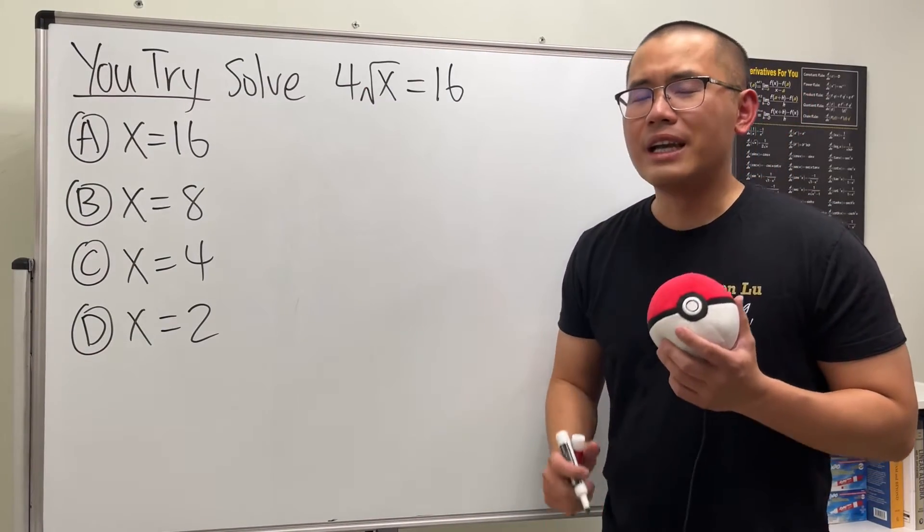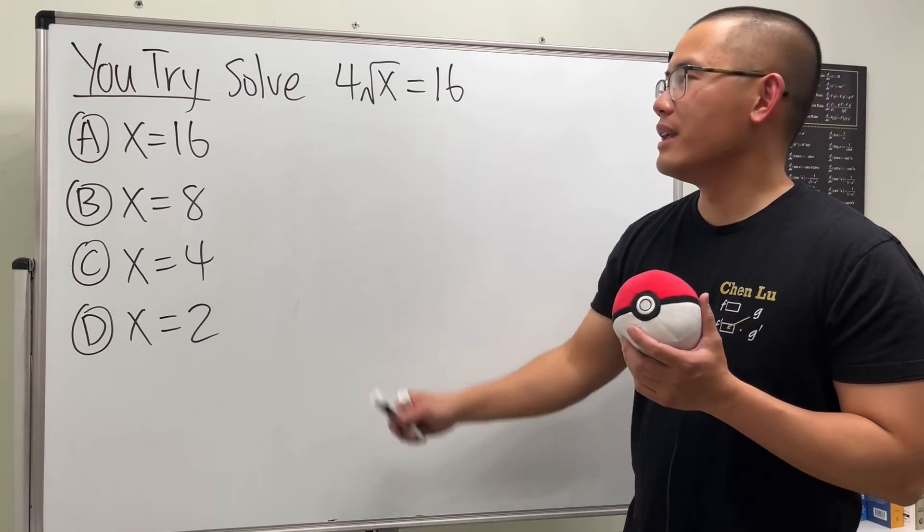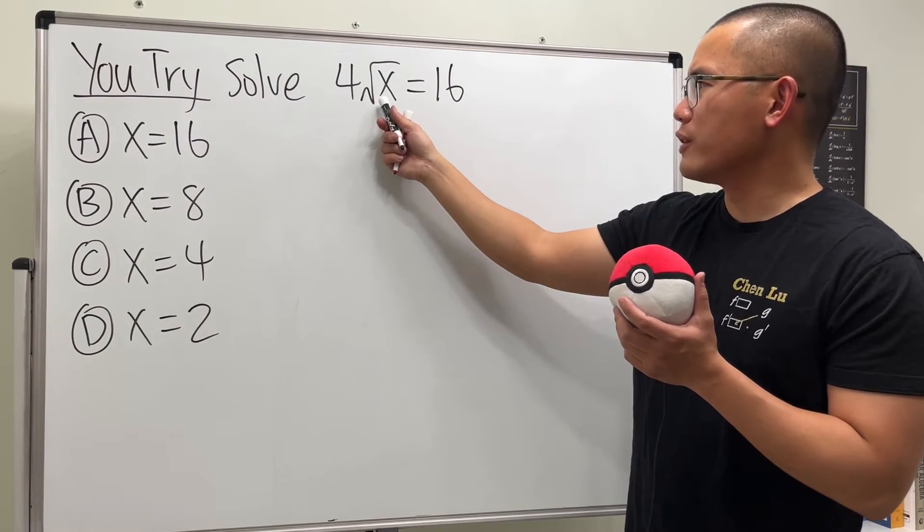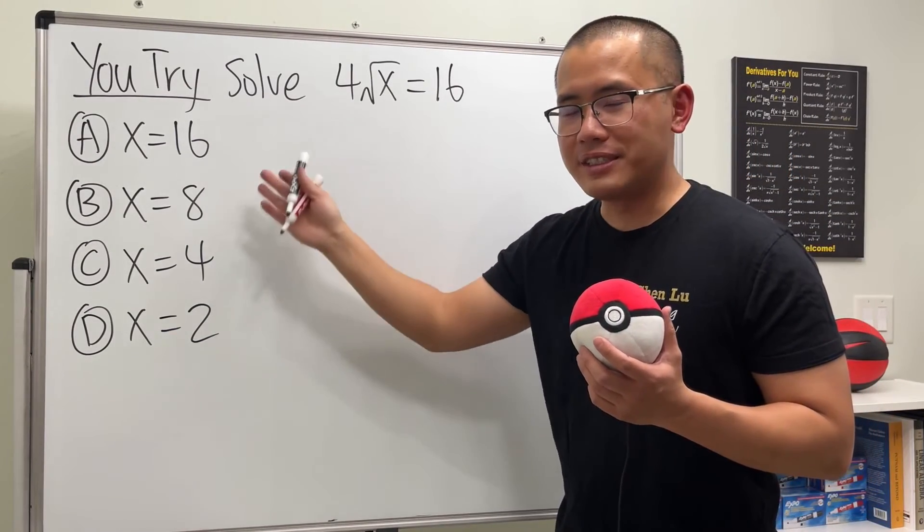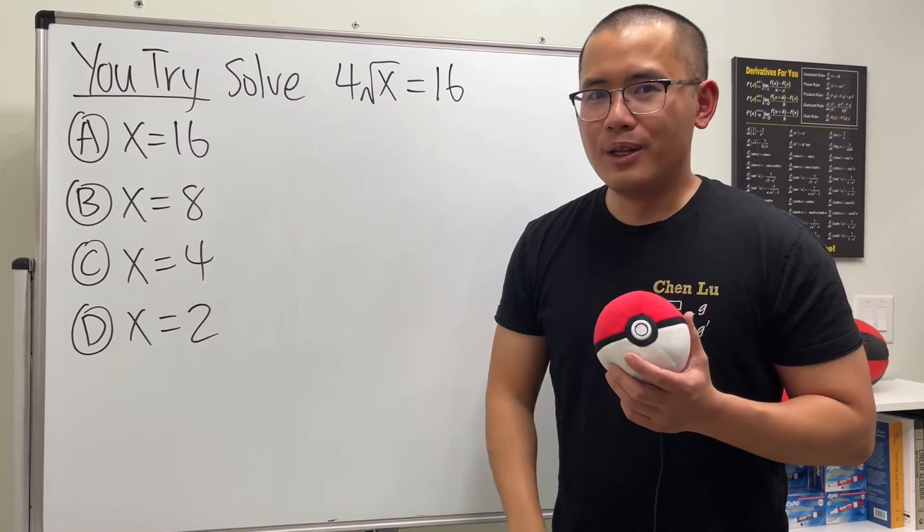All right. Are you ready to try how to solve a square root equation? This is the one. Go ahead and solve. 4 times square root of x is equal to 16. And again, have the answer choices here. Comment down below what you have.